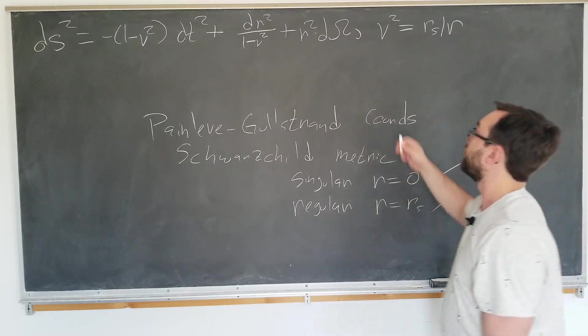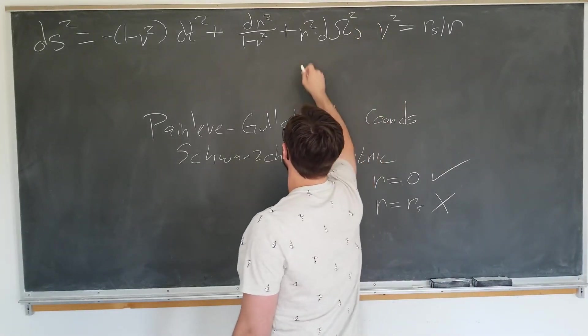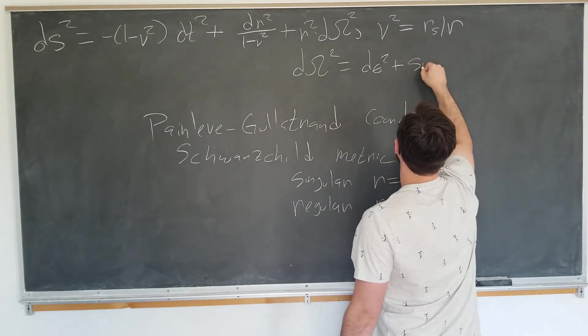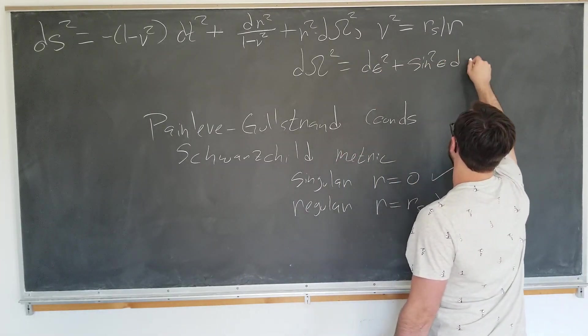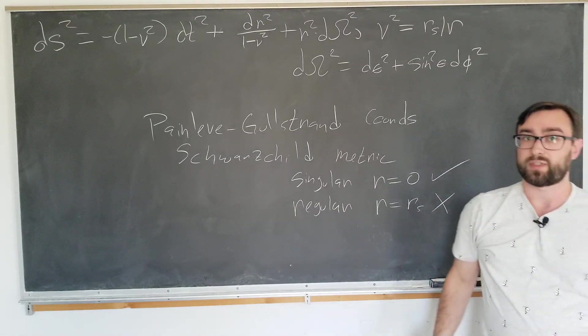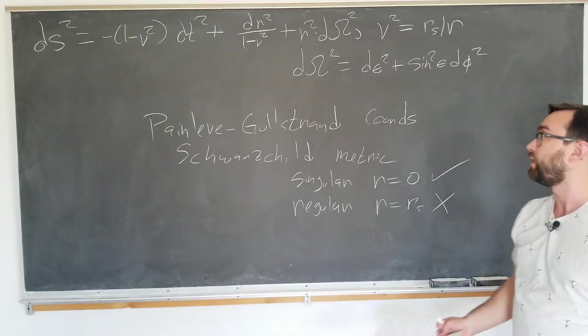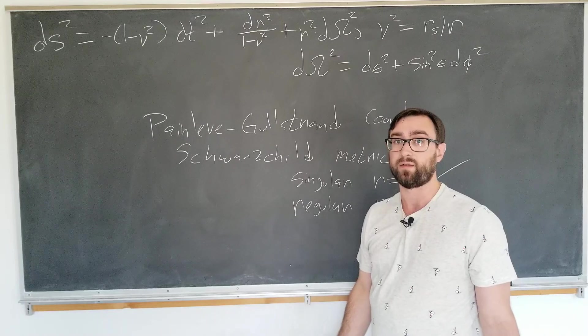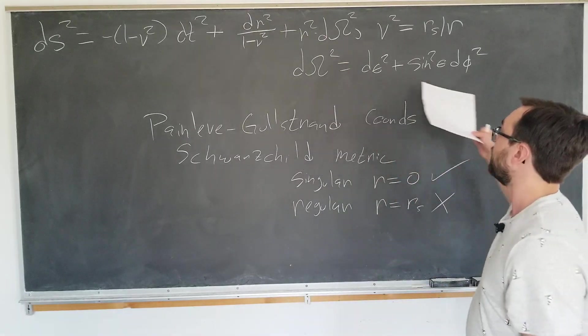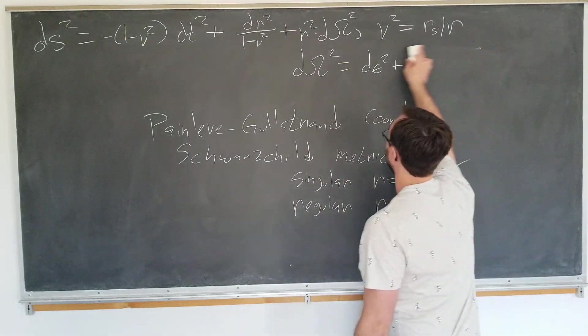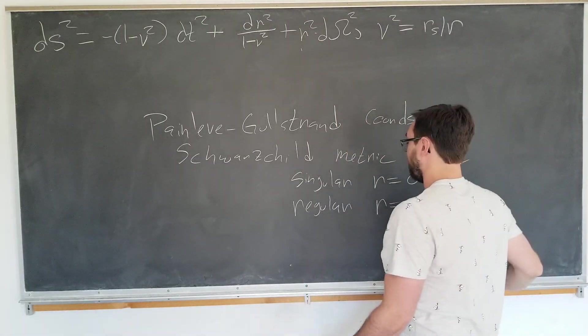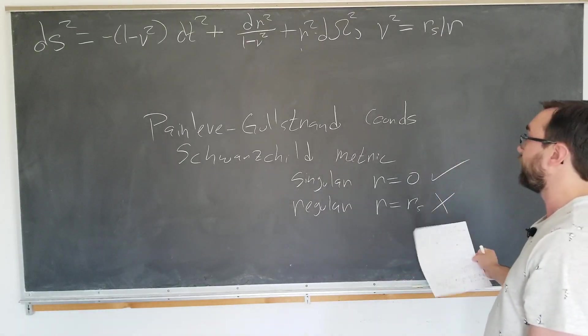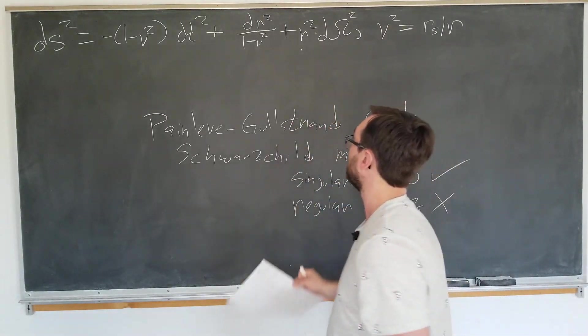The d omega squared is just d theta squared plus sine squared theta d phi squared, the angular part. The metric is spherically symmetric, and we're only going to be talking about the relationship between the time and radial coordinates here, so we're not going to need this for the rest of the video. This is just the ordinary Schwarzschild metric before we change coordinates. We get the singular behavior as always from the dr squared coefficient.